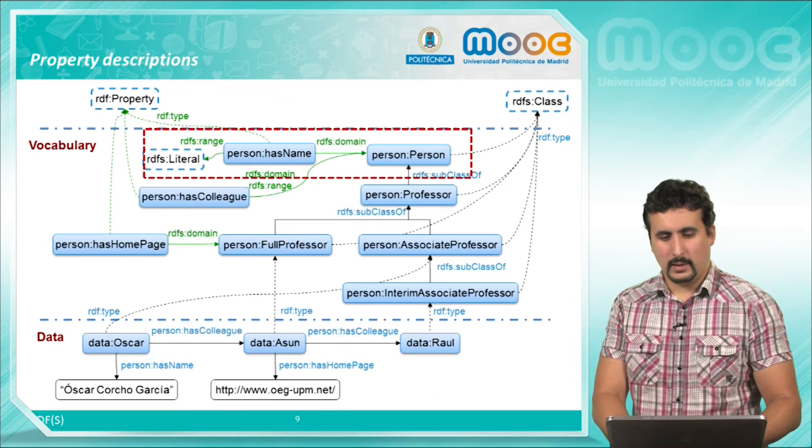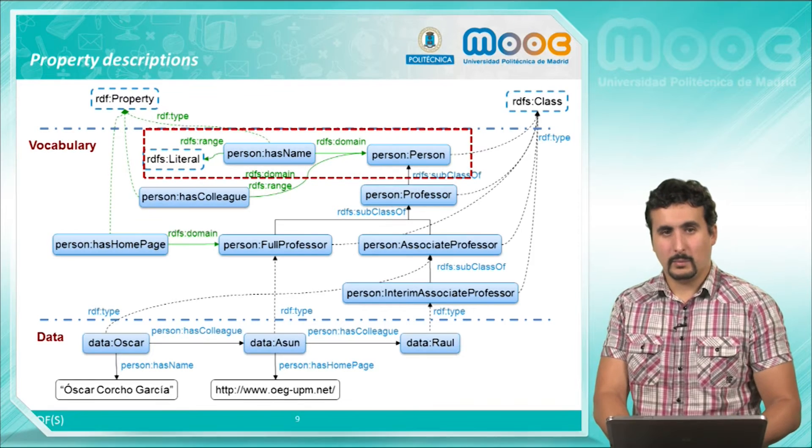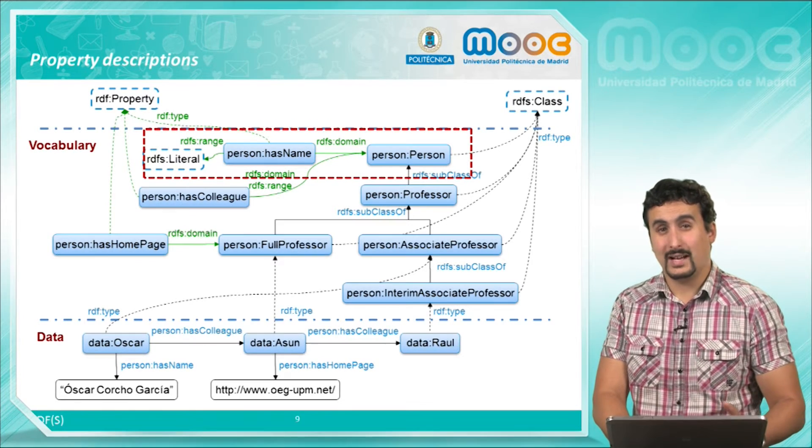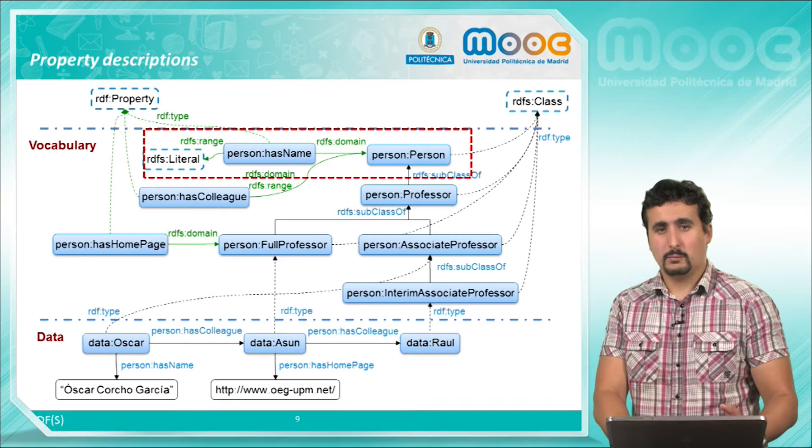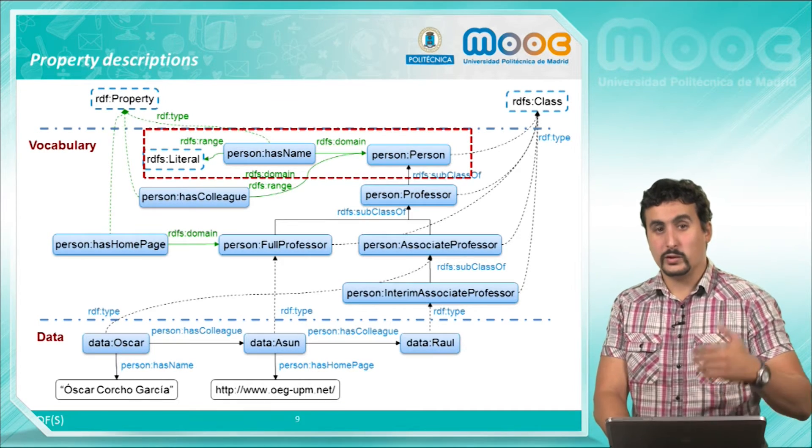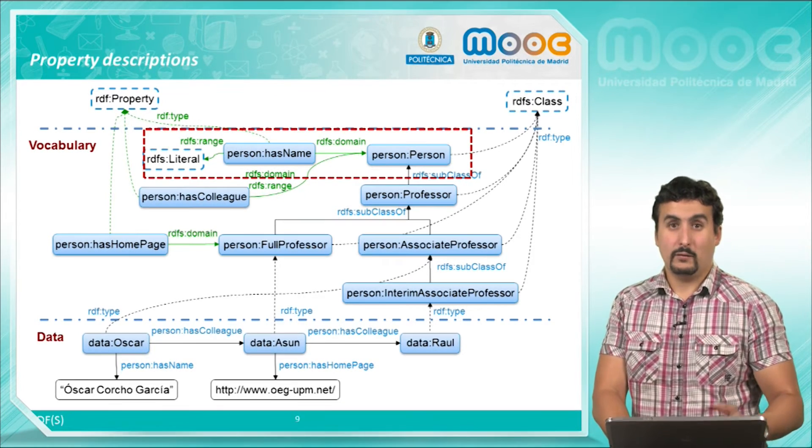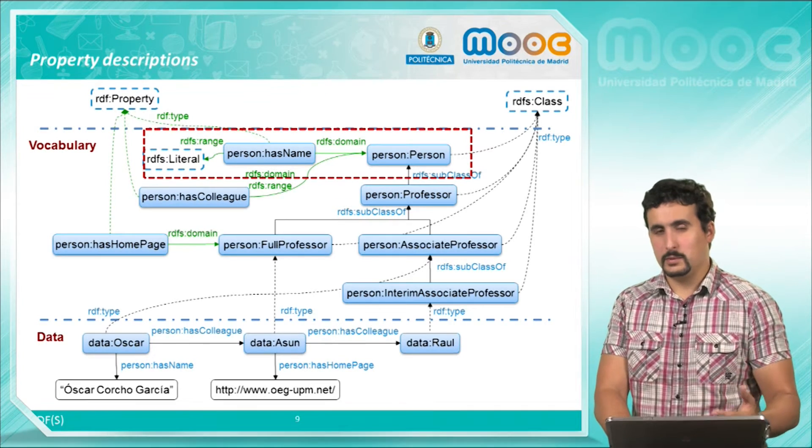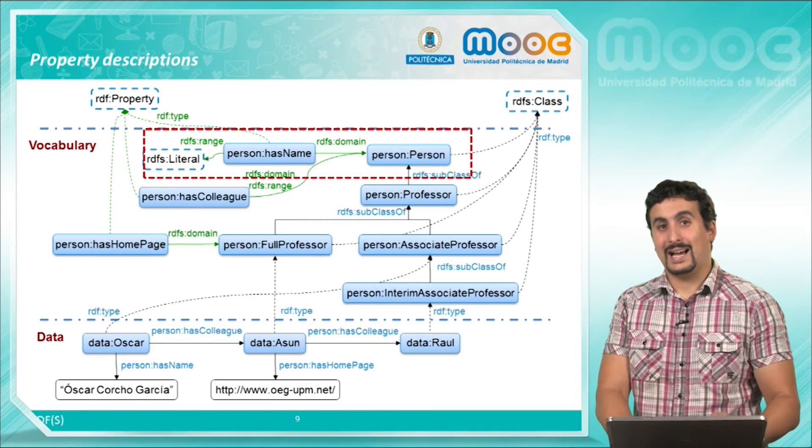For example for the HasName property, the domain is person and the range is a literal. This means that this property can be applied to persons which will be the subject of the triple, and the value, that is the object of the triple, must be a literal.